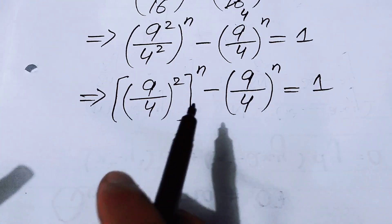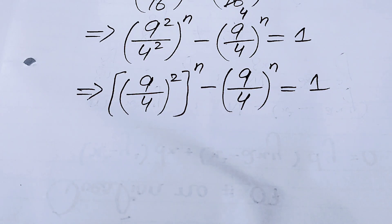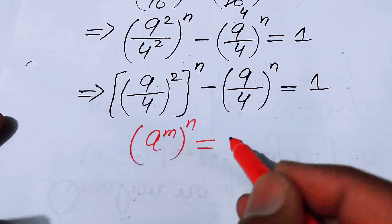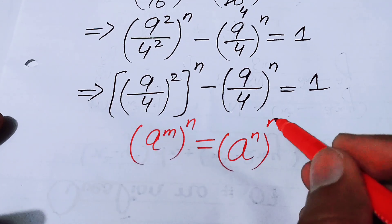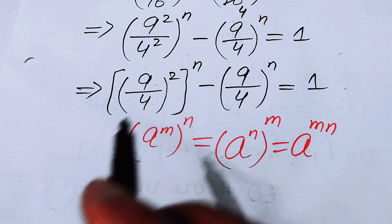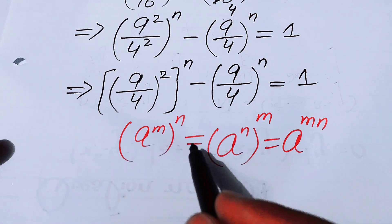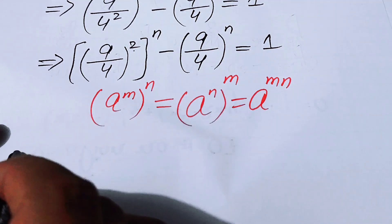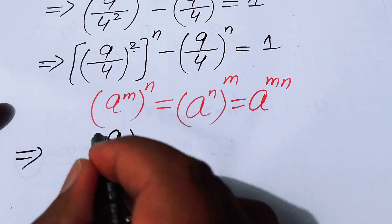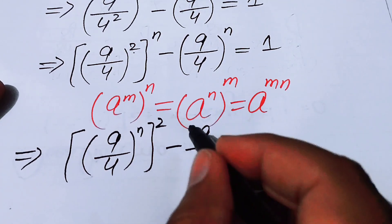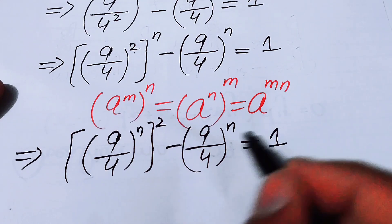We now apply another exponential law: a^m to the power of n equals a^(m·n). This means if we have an exponent raised to an exponent, we can interchange them without affecting the final answer. So we rewrite (9/4)^(2n) as ((9/4)^n)² and the equation becomes ((9/4)^n)² minus (9/4)^n equals 1.